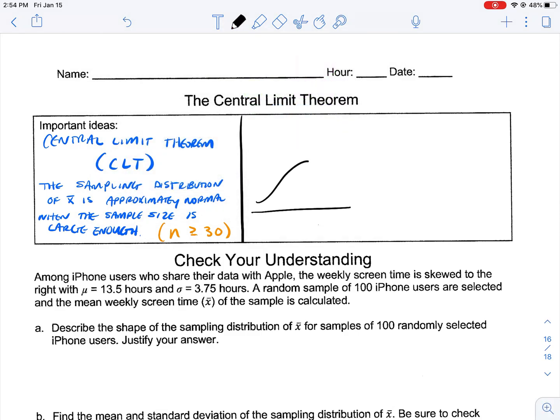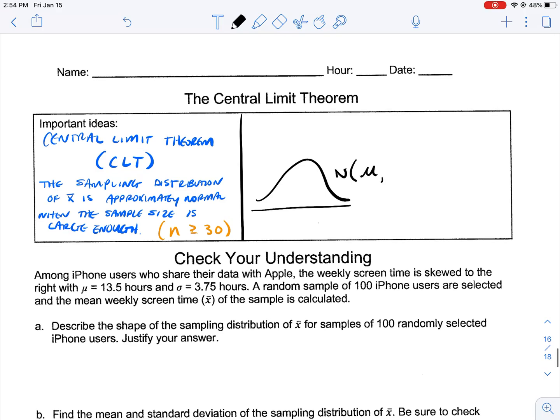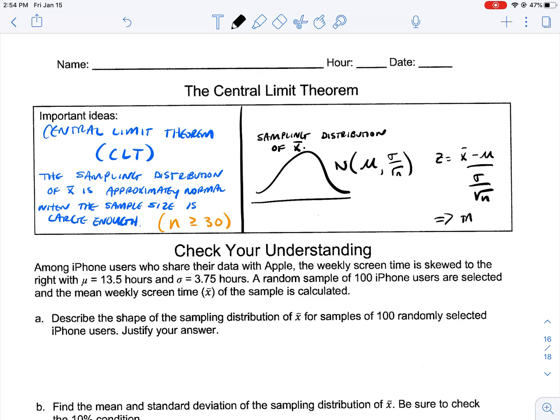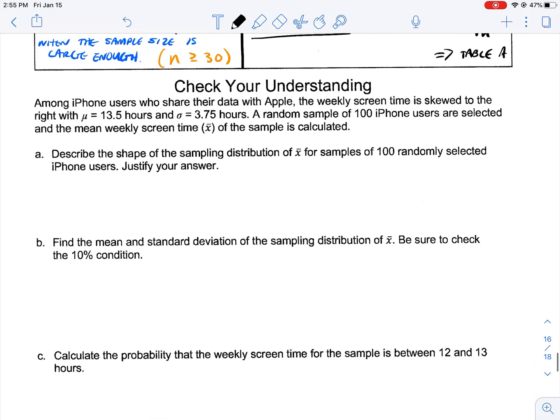What that means is, to review, we'd end up with a curve that looks something like this. It would be normal. Our mean would match the mean of our population. Our standard deviation would still be subject to our sample size. And this is for the sampling distribution of x-bar. We'd calculate our z-score by x-bar minus our mean over our standard deviation, taking into account our sample size. And then we could go to table A or we could do our normal CDF calculations.